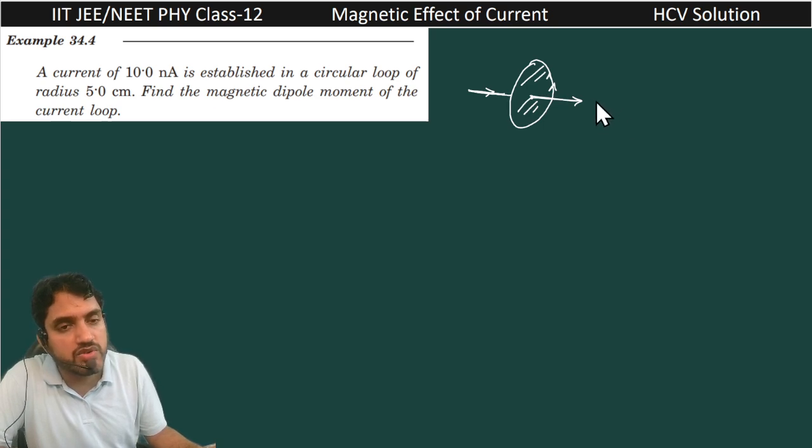So this magnetic dipole you can represent using m. The m vector is equal to n i a. But if you are talking about the magnitude, so m is equal to n i a.